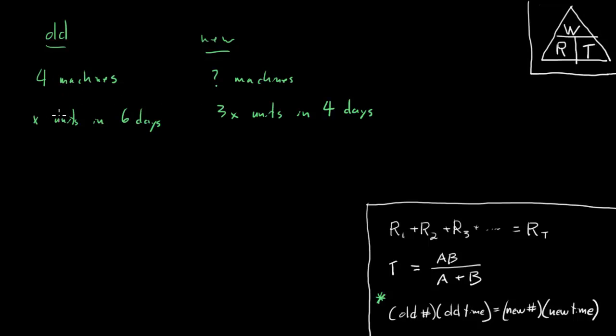If before the change these four machines are doing x units in six days, well how many days will it take them to do three x units? X units in six days, three x units I guess will take three times as long. So three x units in six times three, or 18 days.